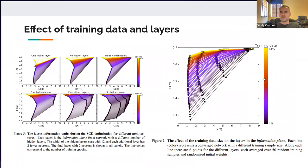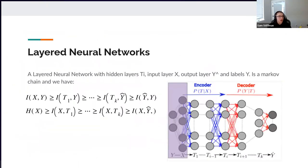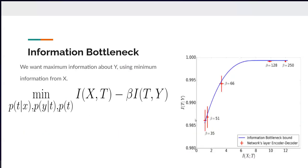A student asked about the role of the trade-off parameter beta — the Lagrange multiplier — in this problem. Sam acknowledged this was a part he hadn't fully explored. He suggested beta controls the balance between minimizing irrelevant information and maximizing relevant information — how much weight you give to removing irrelevant information. One limit would be beta approaching infinity, corresponding to perfect memorization of the dataset.